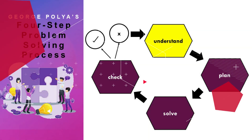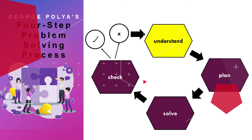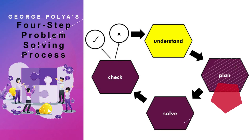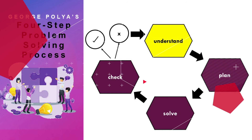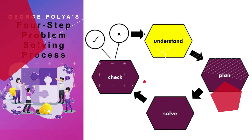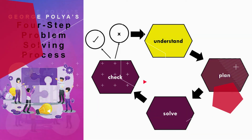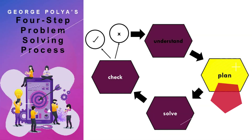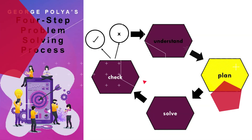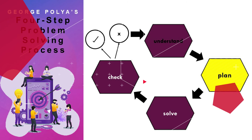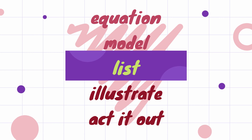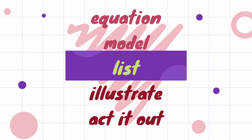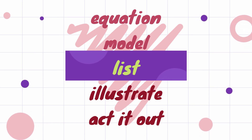Number one, understanding the problem — this means figuring out what the problem is all about, identifying what question or problem is being posed. Number two is devising a plan — you are thinking about how to solve the problem. Will you want to write an equation? Will you want to model the problem with manipulatives? Or are you going to list all the possible answers?